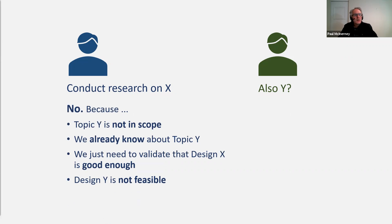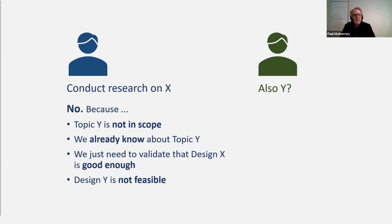A common response would be no, for one of these reasons. The person may say topic Y is not in the scope of our sprint, team, or company. Or they may say we don't need to ask about Y because we already know what users think. Or we don't want to look at design Y — we just want to make sure our design X is good enough. Or design Y is a great idea but not feasible due to schedule, technology, or policy. When researchers hear no, I think we have an opportunity and maybe a duty to push back — to push the envelope, as I'm calling it here.